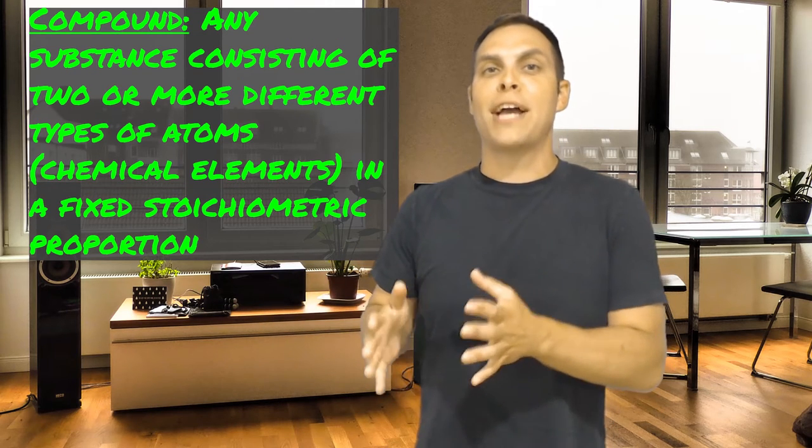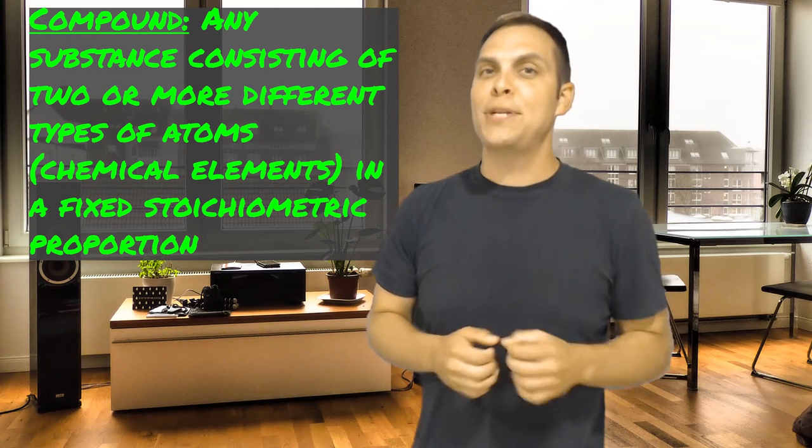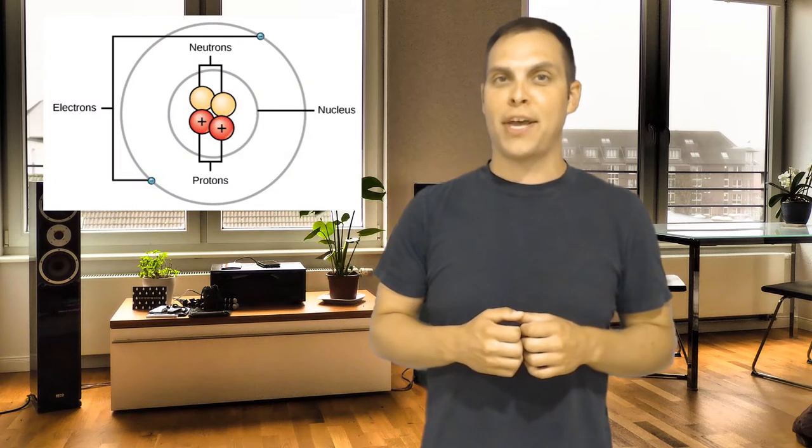Before we can understand the chemical reactions that lead to those compounds forming, first, we need to understand what atomic structure looks like. So, what you can see here is what we call the planetary model of an atom. In the center of an atom, you've got the nucleus with its positively charged protons and its non-charged neutrons. And then, orbiting that positively charged nucleus, you have negatively charged electrons.